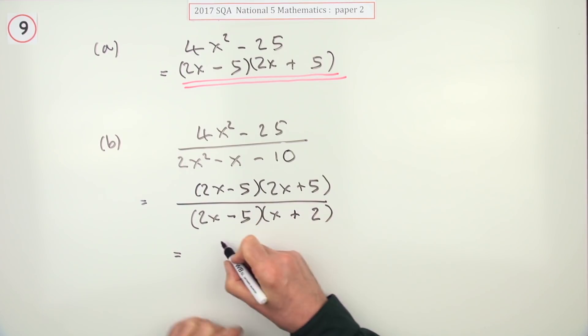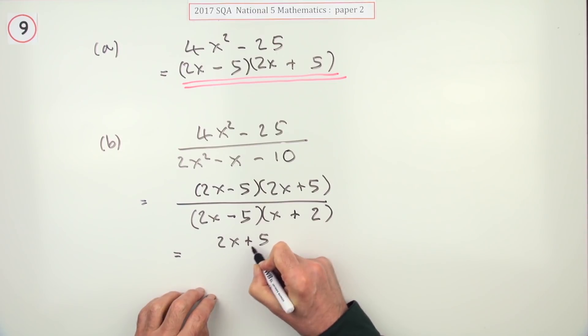Being factors, leaving you just the 2x plus 5 over the x plus 2. Nice.